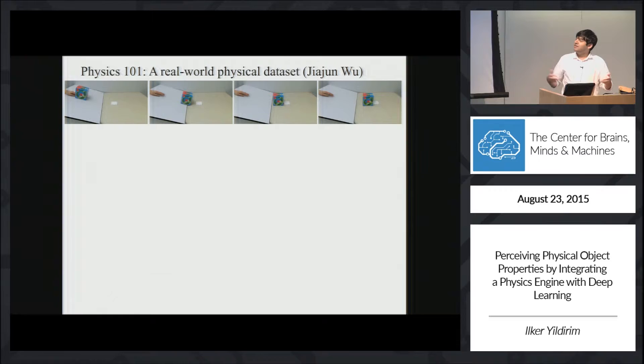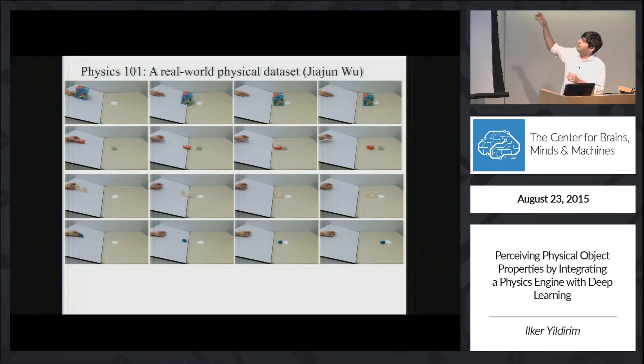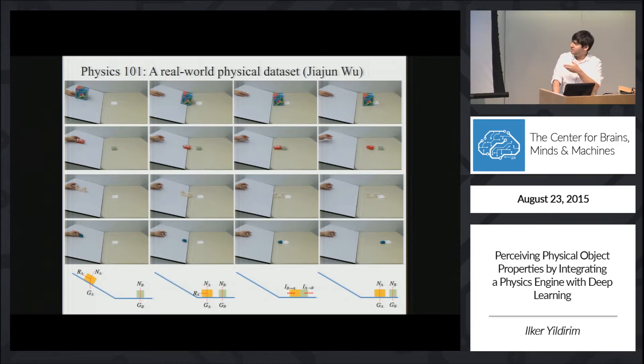So to study understanding dynamical scenes, we turn to this real world dataset, where here you are just seeing a couple frames from a video from this dataset. And here are frames from three more videos from this dataset. It is a really simple setup where there is a ramp and two objects and they slide and collide.